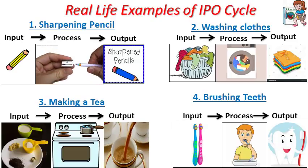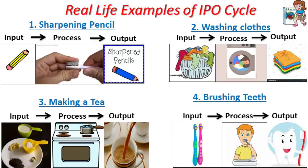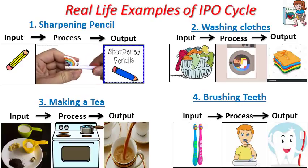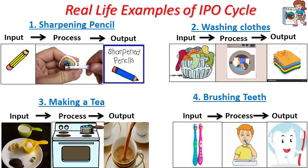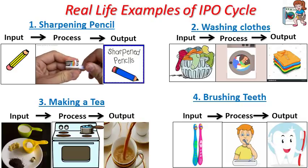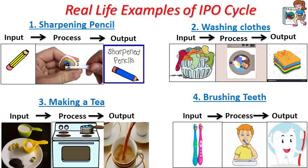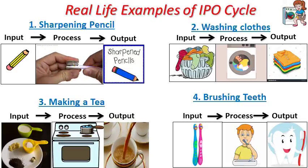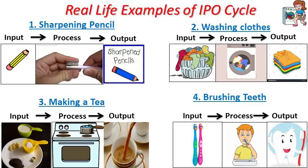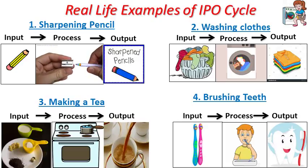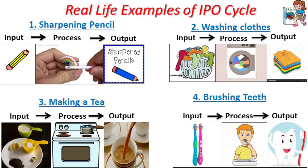Third example: making tea. Inputs are tea powder, sugar, milk and water. Processing is to turn on the stove and boiling of tea. Output is the tea. Example four: brushing our teeth. Inputs are brush and toothpaste. Processing is brushing and output is clean teeth.